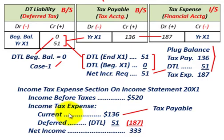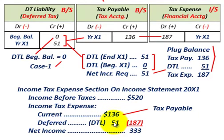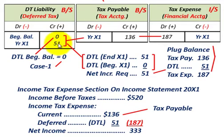The key point: remember the current portion of your income tax expense is the tax payable, and the deferred portion is what we calculated at $51,000. That takes care of Case 1 where our deferred tax liability had a zero balance, and we calculated the deferred tax liability based on our temporary difference reversing with the changing tax rate.